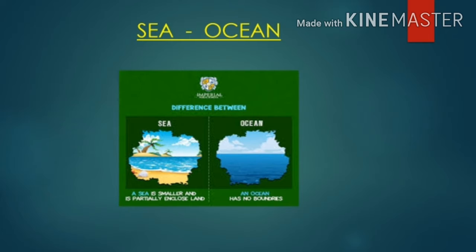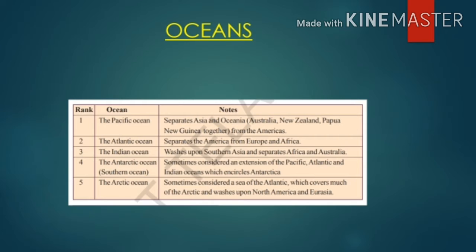Now see the table. You can observe the five oceans. The first ocean, the Pacific Ocean, separates Asia and Oceania — which comprises Australia, New Zealand, and Papua New Guinea — from the Americas. The second ocean, the Atlantic Ocean, separates America from Europe and Africa.